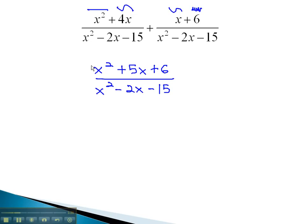Using the AC method, we multiply to 6 and add to 5. This would be 2 and 3, and because of the 1 in front of x squared, we can plug those numbers straight into our factors, x plus 2 times x plus 3.